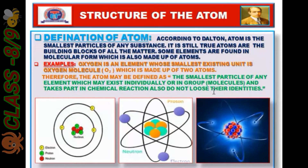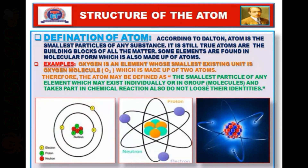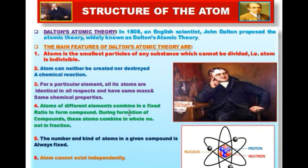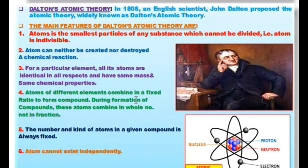During chemical reactions, the atoms do not lose their own identities. For your better understanding, I have given pictures so you can easily understand what atomic structure actually is. Now I am going to explain Dalton's atomic theory — that means what concept was built at that time in the 19th century.